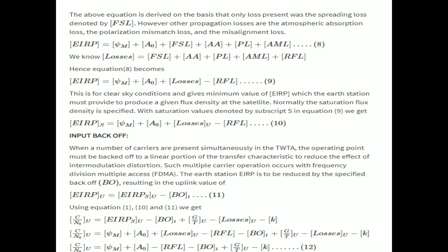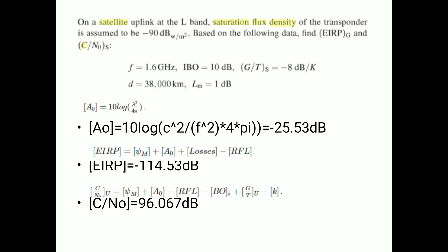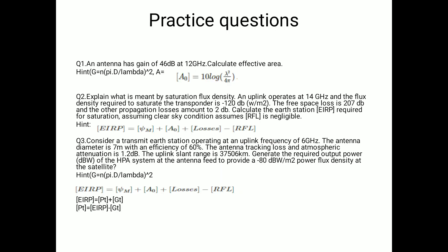Let's solve a problem: on a satellite link at L-band, the saturation flux density of a transponder is −90 dBW/m². Using the given data, find EIRP and C/N. EIRP = ψ + A₀ + losses − RFL. After calculating A₀, we compute C/N = ψ + A₀ − RFL − backoff + G/T_uplink − k, where k = −228.6, giving C/N as 96.067 dB. A few practice problems are provided — try solving them using the formulas covered, and feel free to ask if you have any doubts. Thank you.